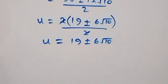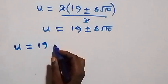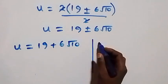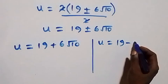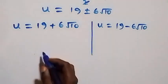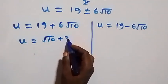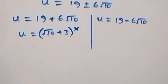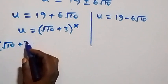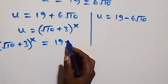This means we either have u equals 19 + 6√10, or u equals 19 - 6√10. Recalling that u equals (√10 + 3)^x, the first case gives (√10 + 3)^x equals 19 + 6√10.